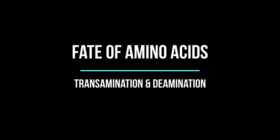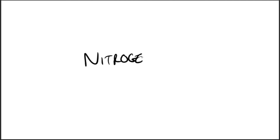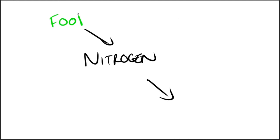Welcome to Leila Teachers. Today we'll speak about the fate of amino acids and also about transamination and deamination. Nitrogen enters the body in a variety of compounds present in food, the most important being amino acids contained in dietary protein. Nitrogen leaves the body as urea, ammonia, and other products derived from amino acid metabolism.